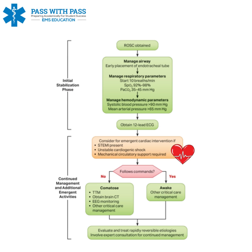Obtaining a brain CT is obviously not something we do in the field, but essentially what they're looking for is any type of brain bleed or injury to the brain. Other critical care management — definitive care in the hospital — involves going to the cath lab, the ICU, or wherever appropriate for continuous observation, blood work, and EKG monitoring. We're now jumping back to the second large green square on that algorithm: the initial stabilization phase.